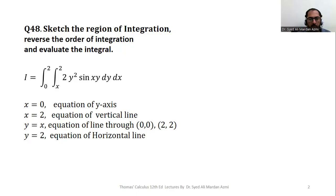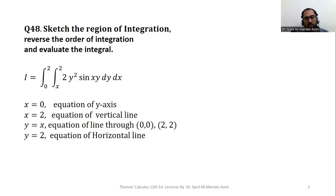In this question, we have to perform three activities. First, we will sketch the region of integration. In the second part, we will reverse the order of integration. Reversal of order of integration means we will interchange our inner and outer variable. In this question, our inner variable is y and outer variable is x, so we will interchange them and make x our inner variable and y our outer variable. In order to perform this activity, first of all, we have to sketch the region of integration.